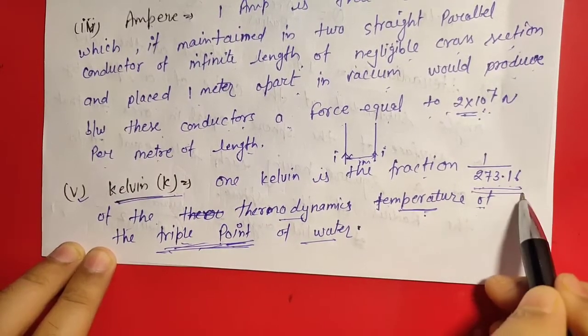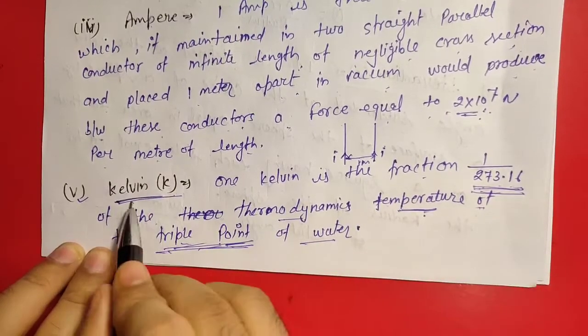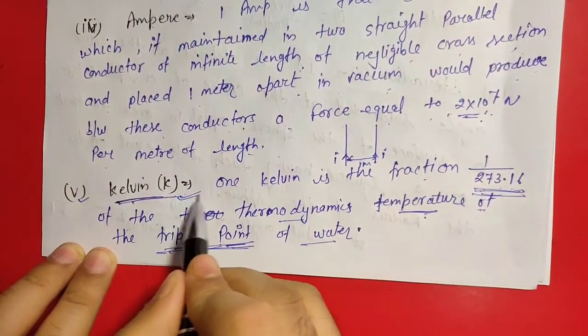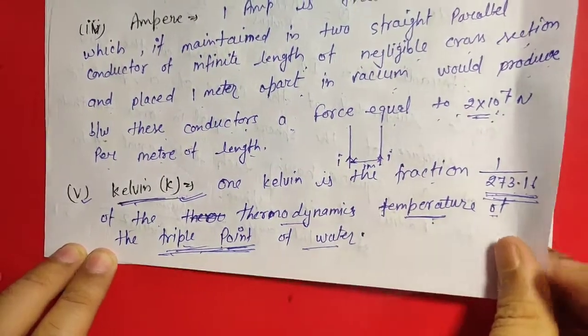One Kelvin is the fraction 1/273.16 of the thermodynamic temperature of the triple point of water. That is the standard definition of Kelvin.